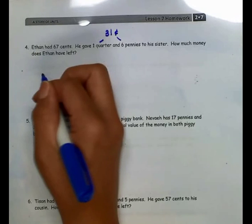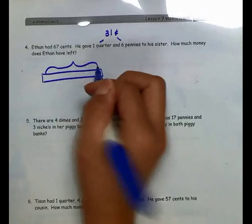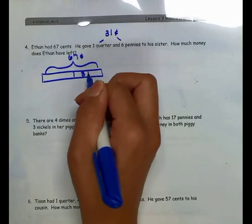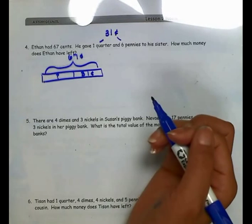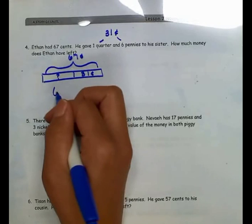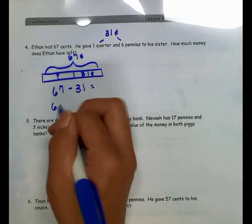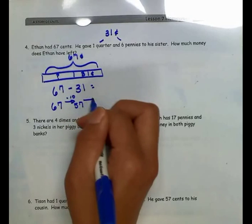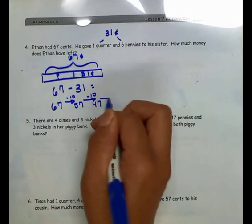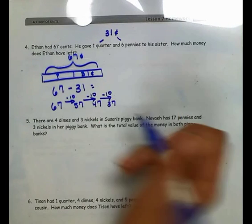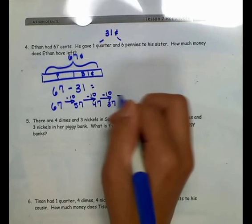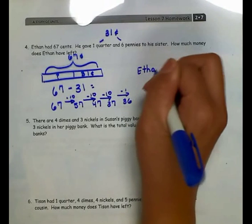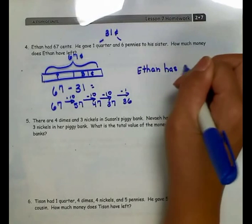Now I'm going to use a tape diagram. I know he has a total of 67 cents. He gave 31 cents to his sister, but I need to figure out how much he has left. I'll subtract 67 minus 31, using the arrow way. 67 minus 10 is 57, minus 10 more is 47, minus 10 more is 37. I've taken away 30; I need to take away 1 more. 37 minus 1 is 36. Ethan has 36 cents left.